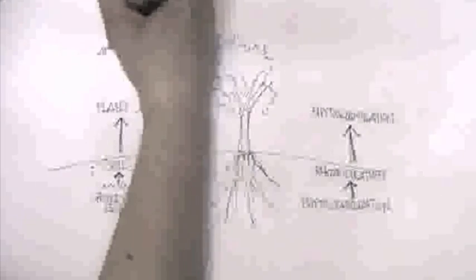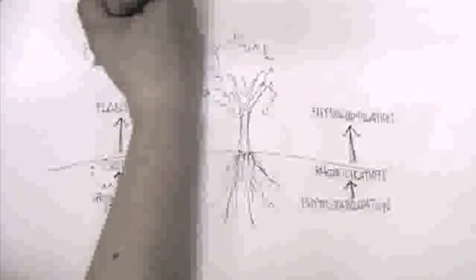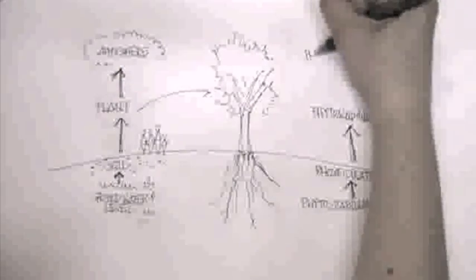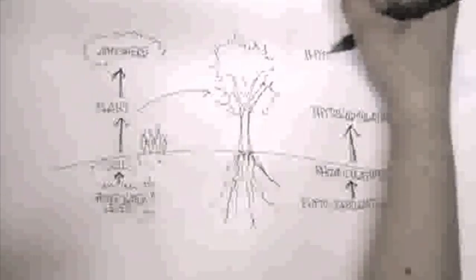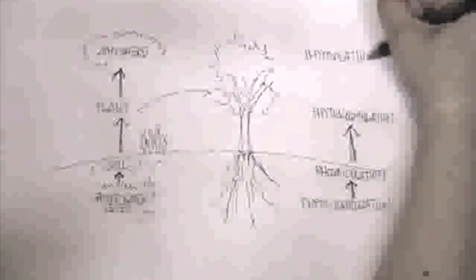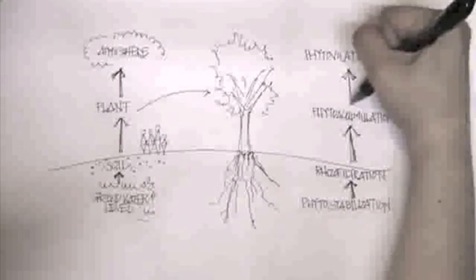Phytovolatilization is the process where plants uptake contaminants, which are water-soluble, and release them into the atmosphere as they transpire the water. The contaminant may become modified along the way as the water travels along the plant's vascular system, from the roots to the leaves. The contaminants then evaporate or volatilize into the air surrounding the plant. And there you have the four main components of phytoremediation.